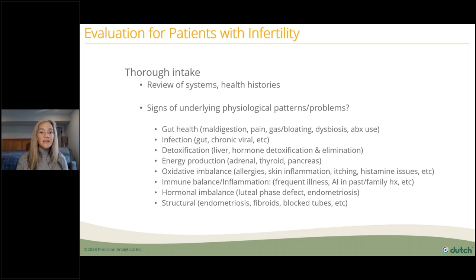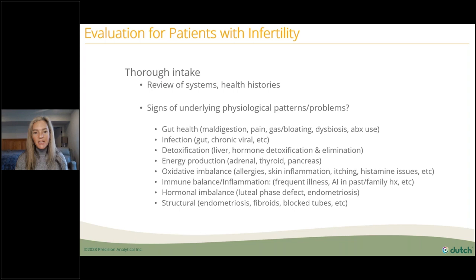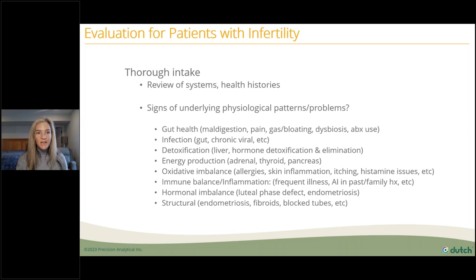Also look for signs of oxidative imbalances — allergies, eczema, skin inflammation, rashes, itching, or histamine issues. Assess immune balance: frequent illness, autoimmunity for themselves or their family. And of course look at hormonal imbalance — I love when patients chart their cycles using basal body temperature and mucus tracking. Also consider structural issues like endometriosis, fibroids, or blocked tubes. Take a broader look than just the genitourinary piece.